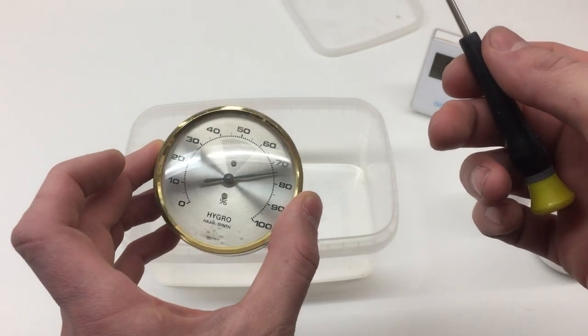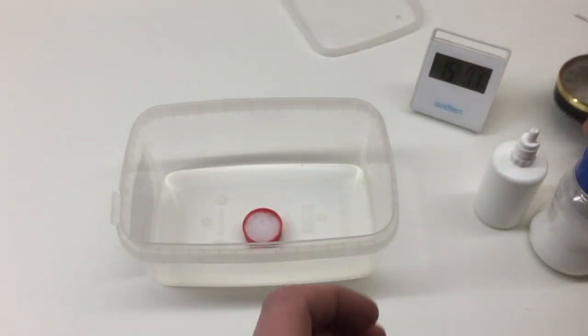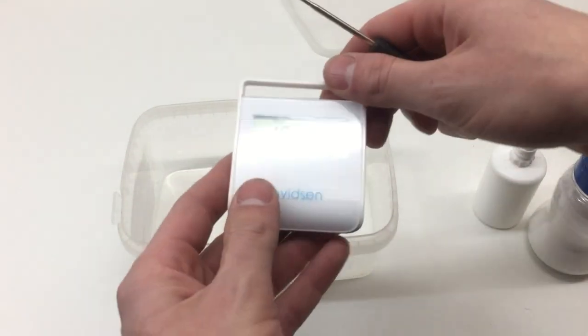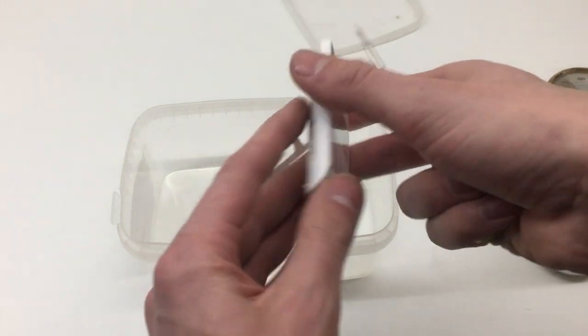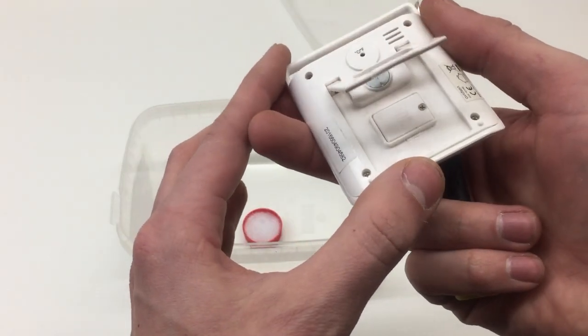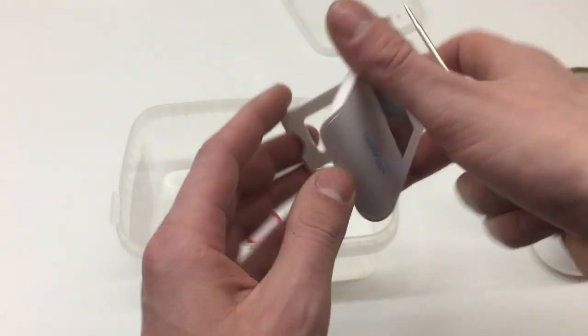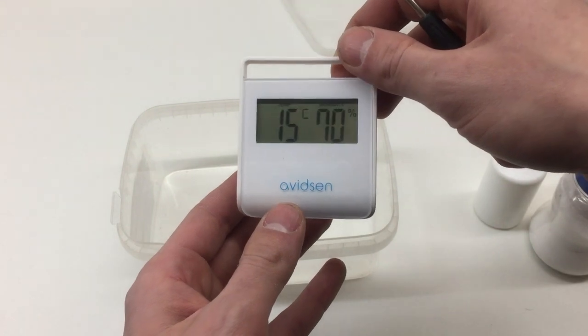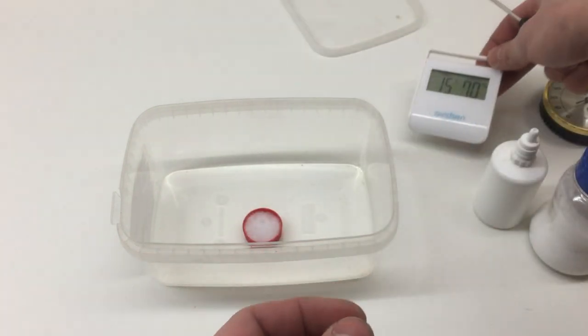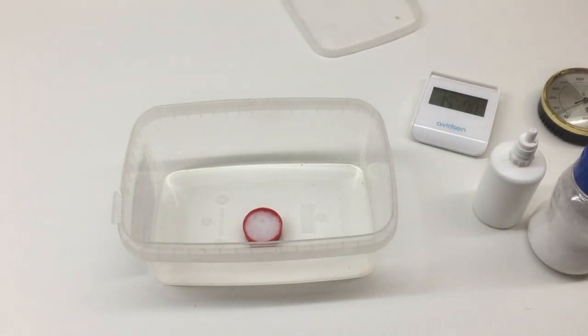And there it is, 75 percent. With this one however, it's not possible to adjust so we have to make a mental note maybe on the back here somewhere of how many points off it is. When it was in the container it read 71 percent so we have to make a note that it's four points behind.